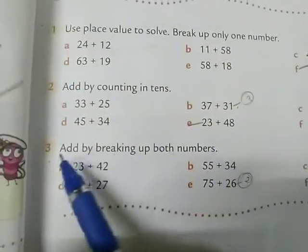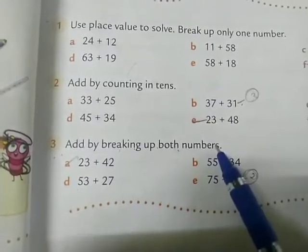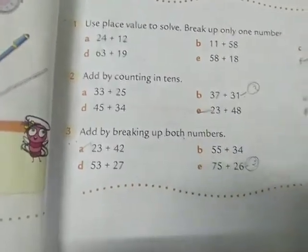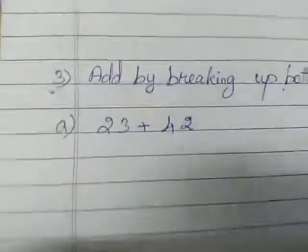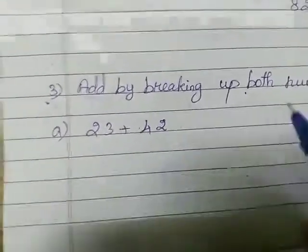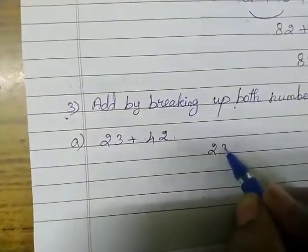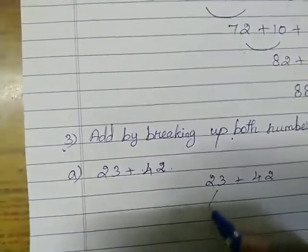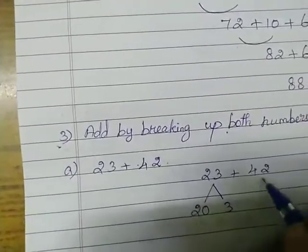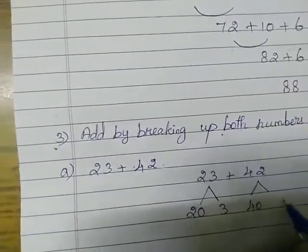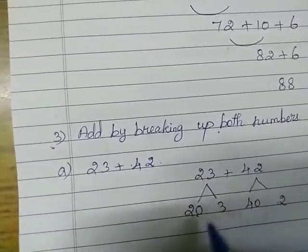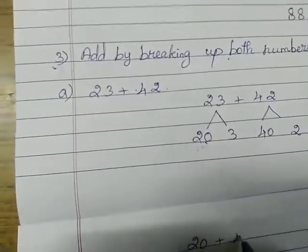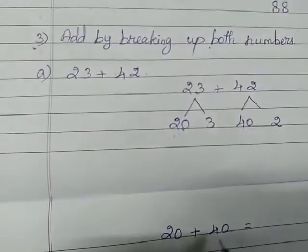Now we are going to see the next method: add by breaking up both numbers. The example is 23 plus 42. We are going to break up both numbers. 23 breaks into 20 and 3; 42 breaks into 40 and 2. First, take and write the tens digits: 20 plus 40 equals 60.